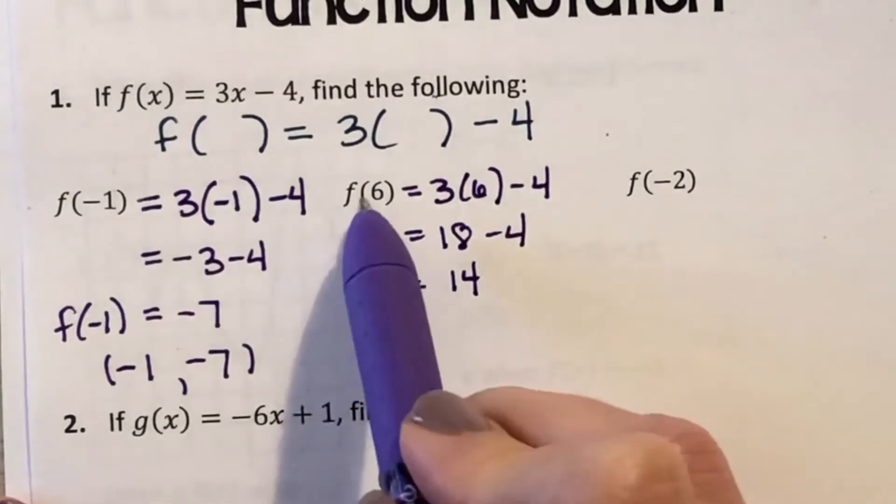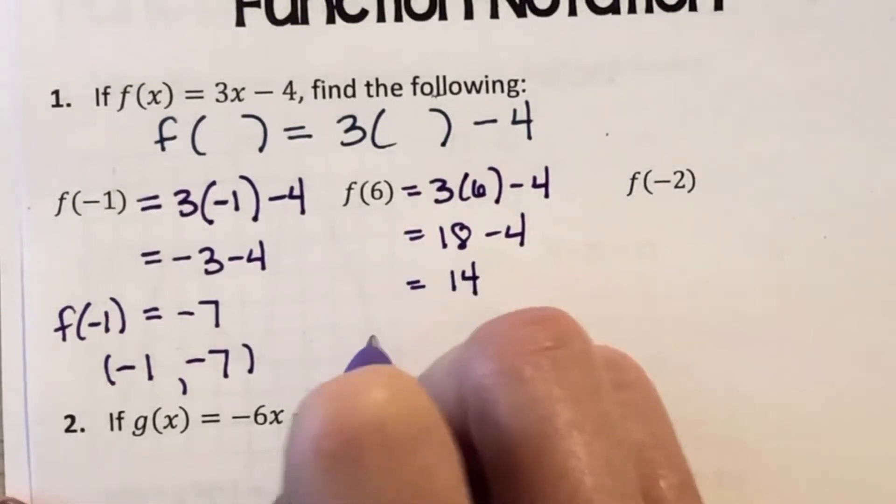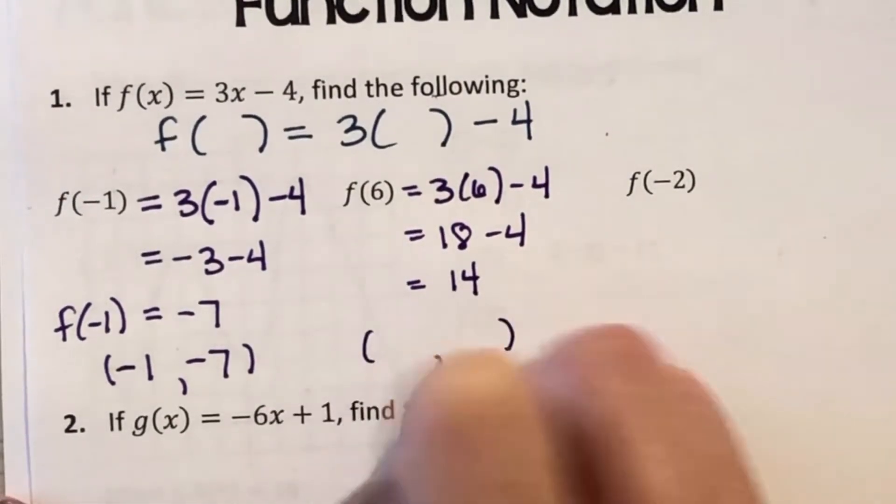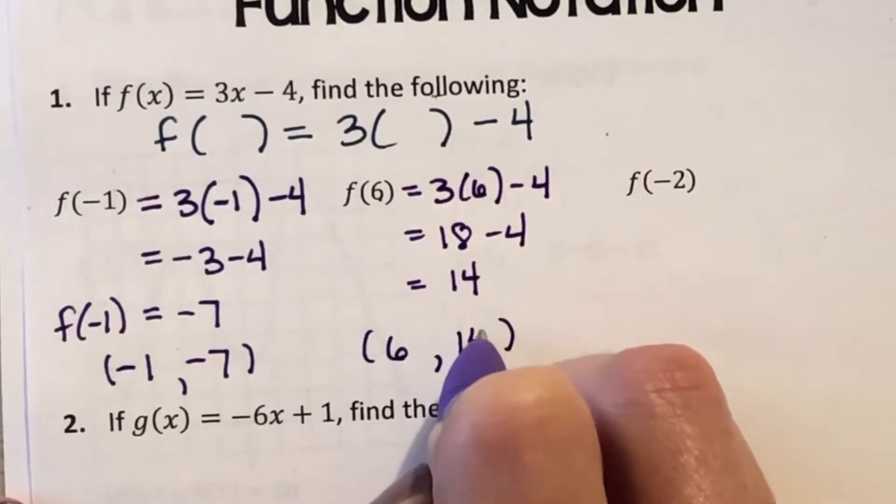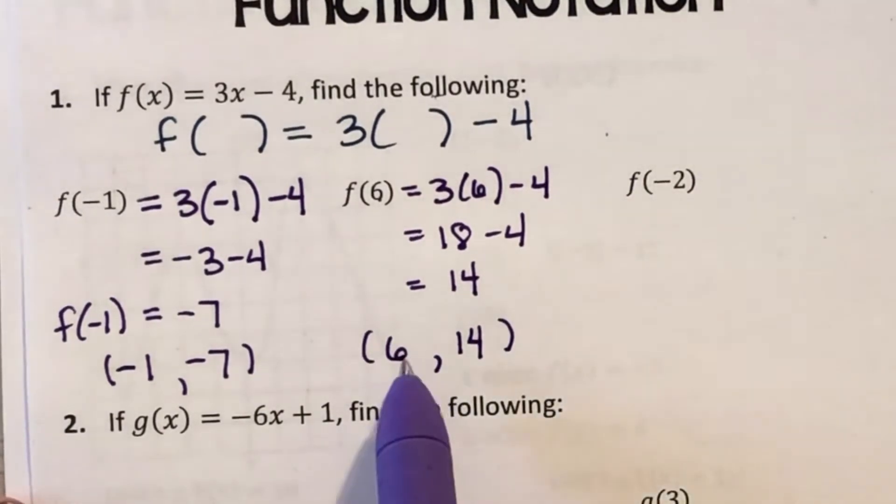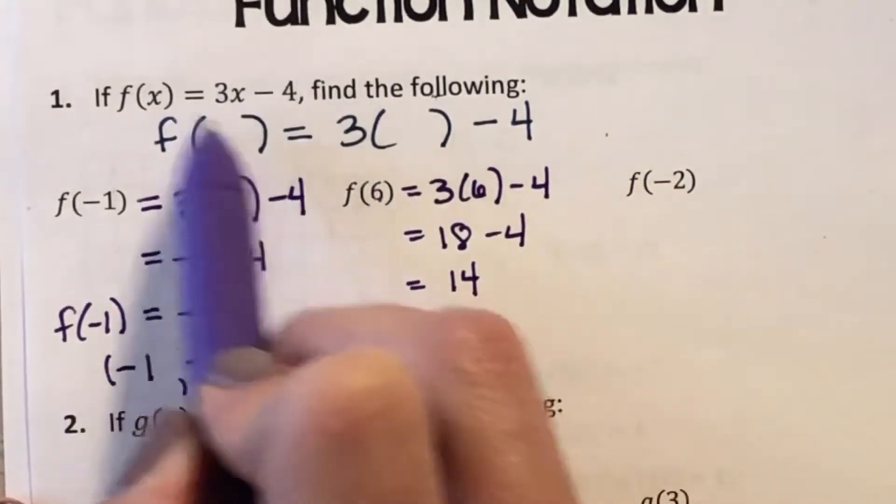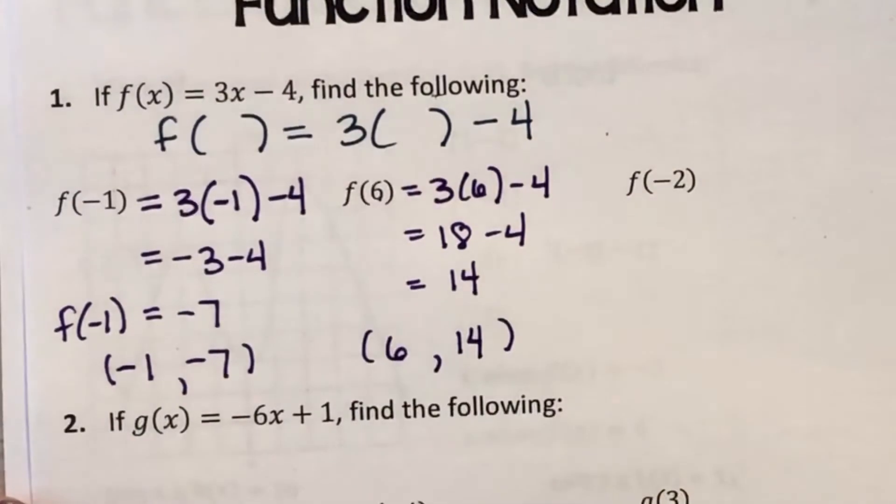So f of 6 equals 14. And as a coordinate point, my x value, my input is 6, and my output, my y value, is 14. So I also know that 6, 14 is one of my pairs that follows this rule.